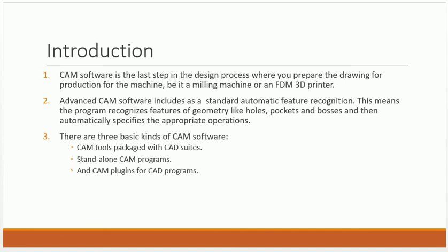First, we have NC machines — Numerical Control — where you have a tape. Those tapes are punched with the programs, and they are read by tape readers. The punch tapes are read by the tape readers and the data is sent to the NC machines.